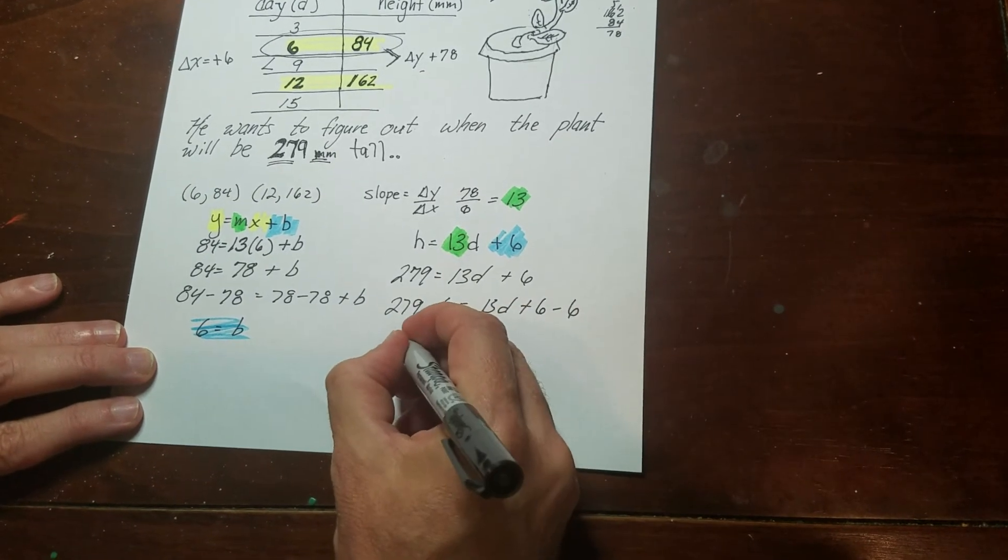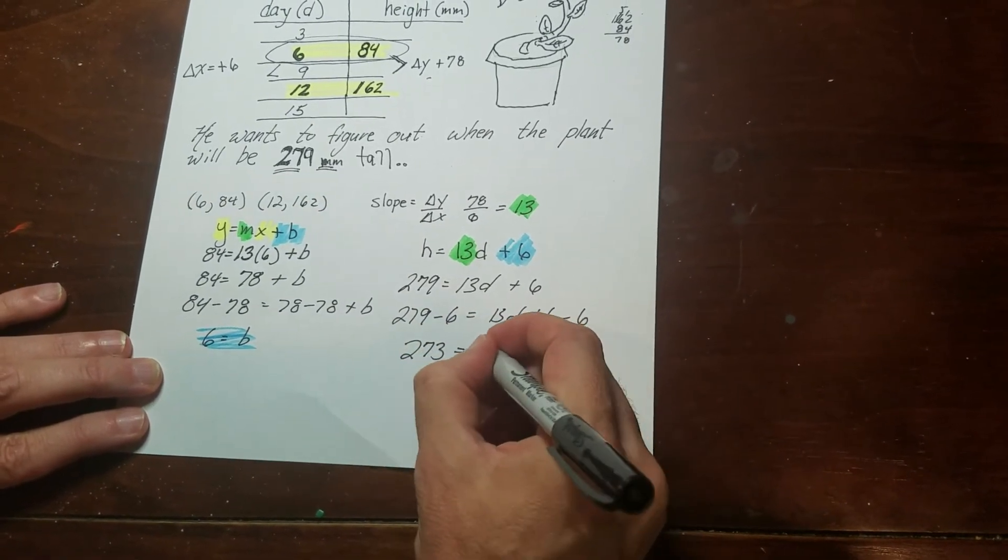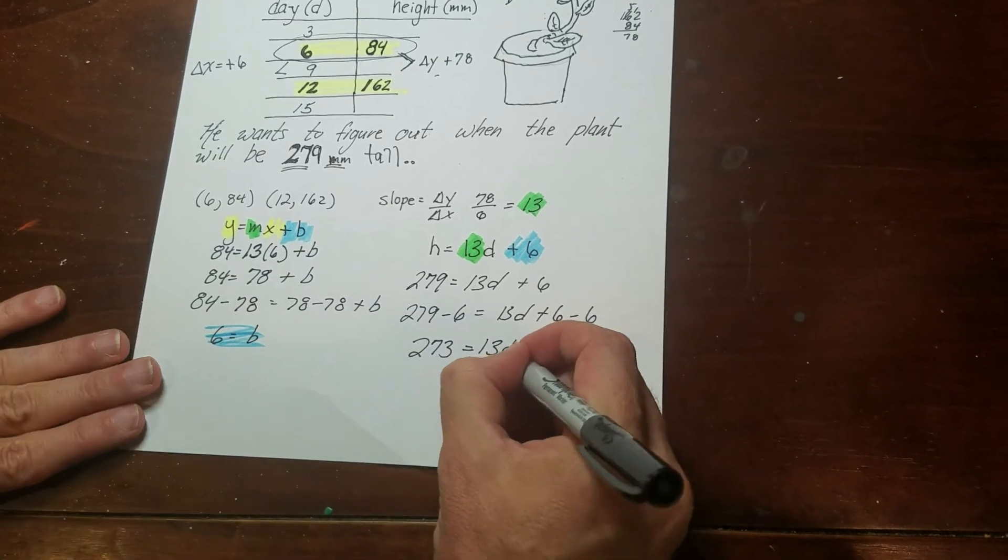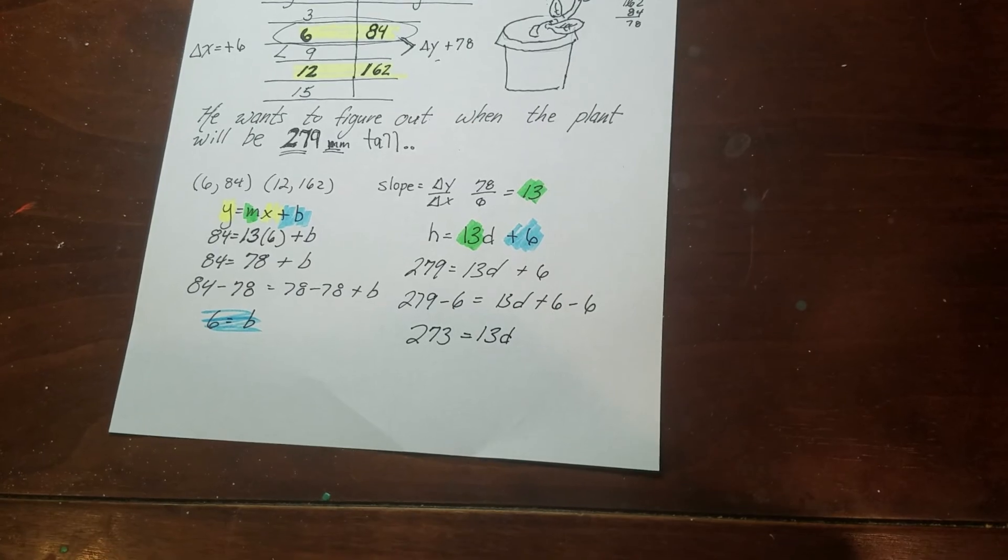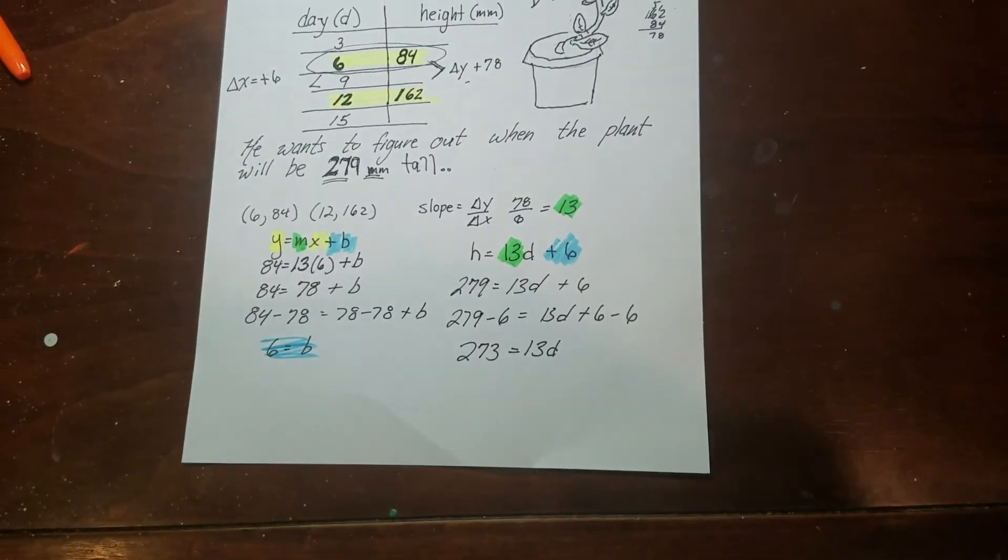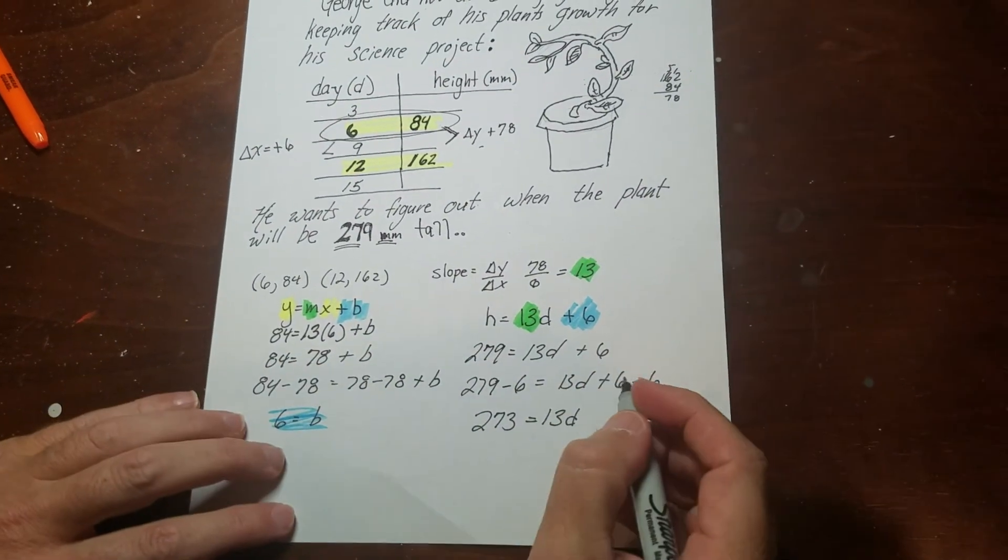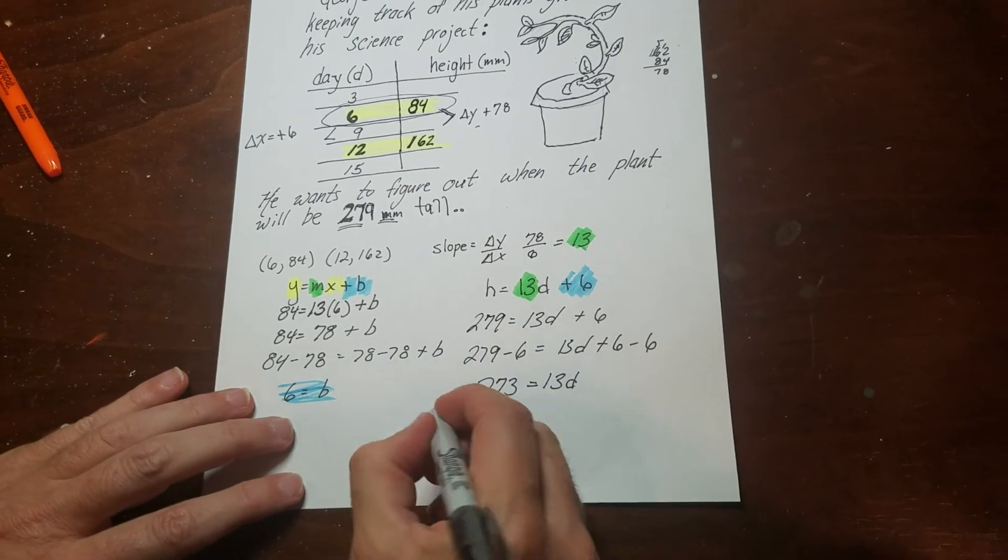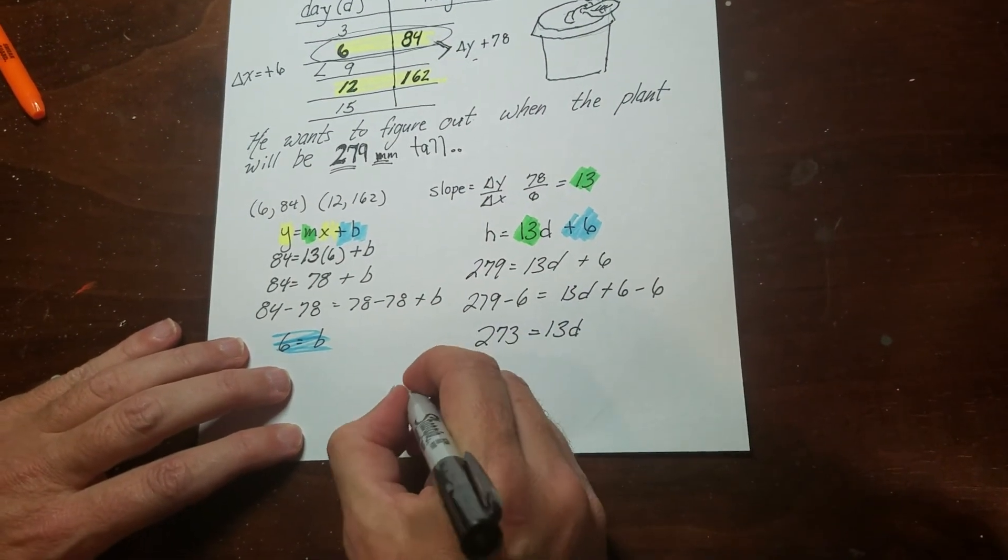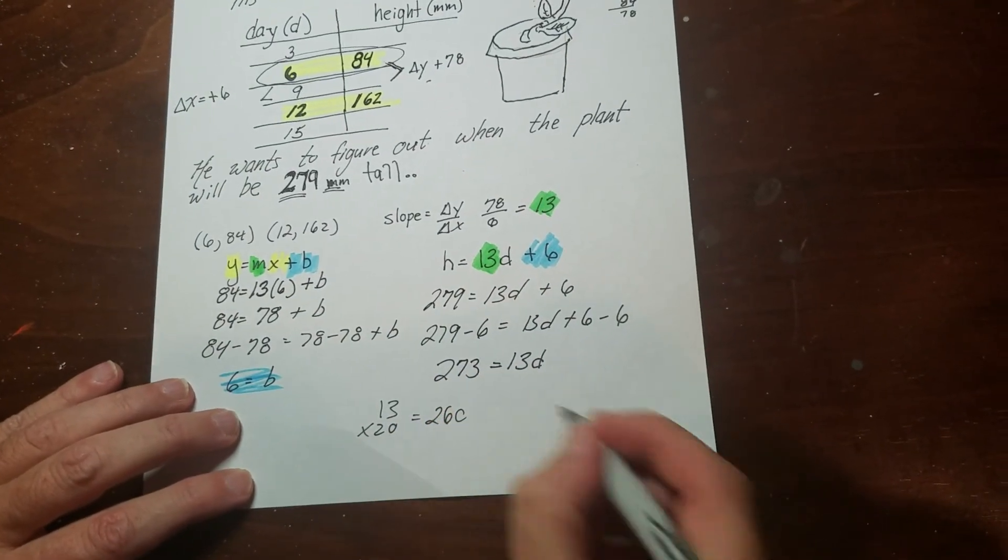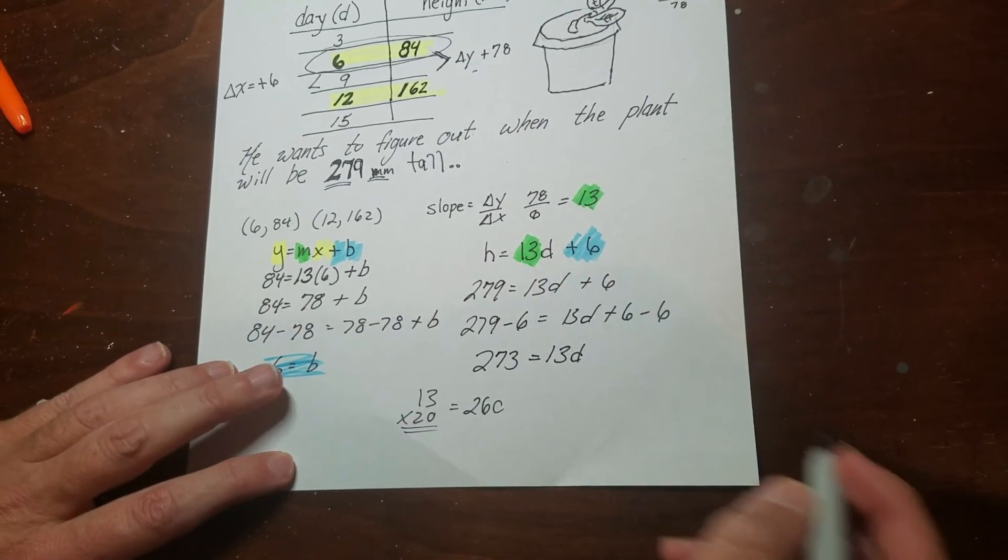And so this comes to 273 is equal to 13d. I definitely don't trust myself with that. But sometimes you got to try, right? So I'm going to think it's 13. Let's see. I know 13 times 20 is 260. Okay, I'm close. It's 21.